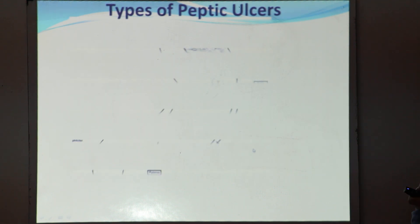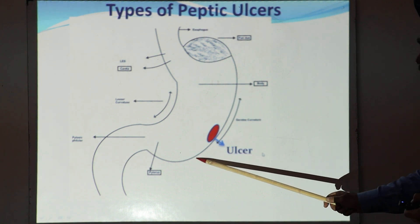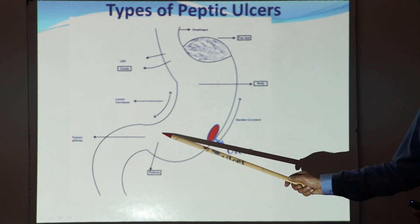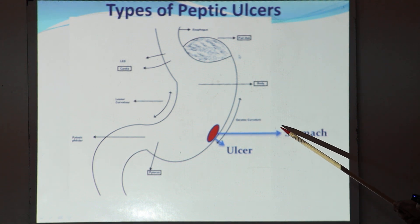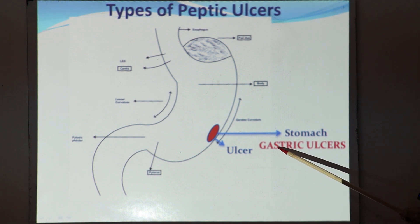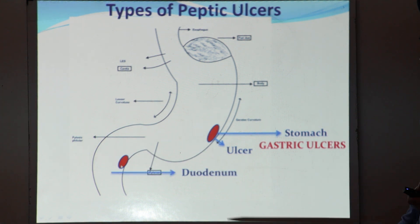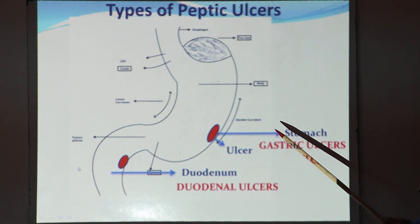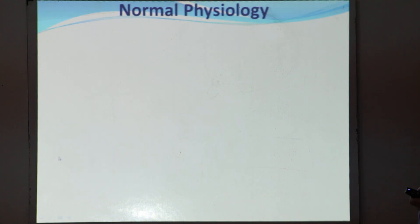Peptic ulcers can occur in the stomach region; they can be single or multiple, mostly single. If ulcers take place in the stomach, we call them gastric ulcers. These ulcers can also take place in the first part of the small intestine, the duodenum, and those are called duodenal ulcers. So we have either gastric ulcers or duodenal ulcers.